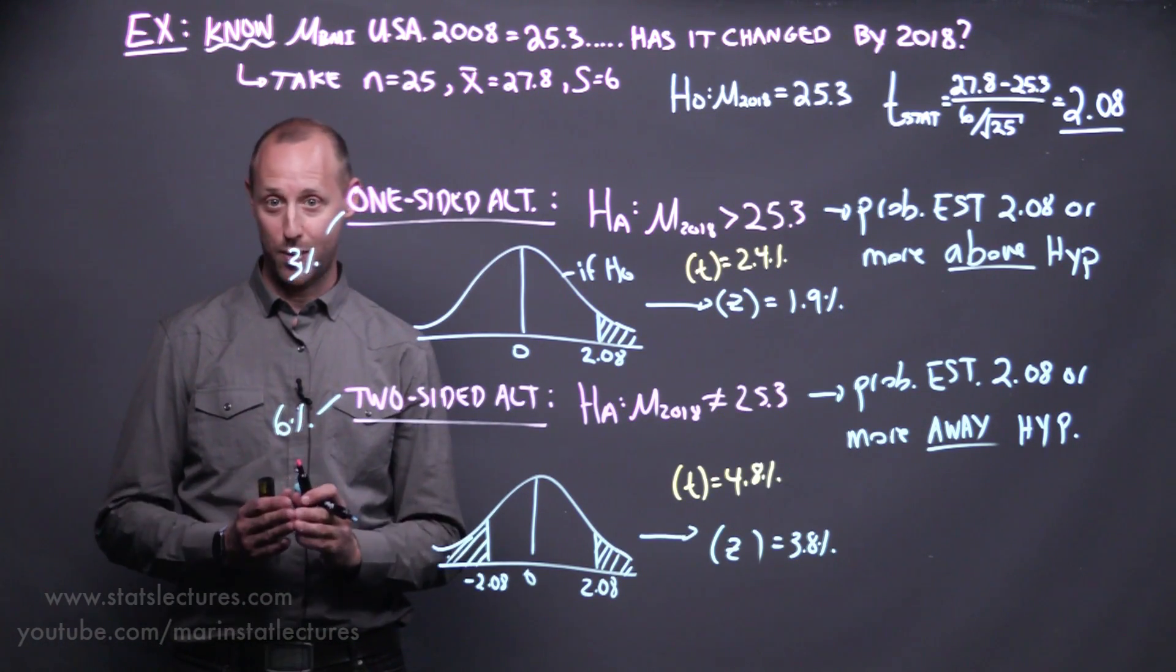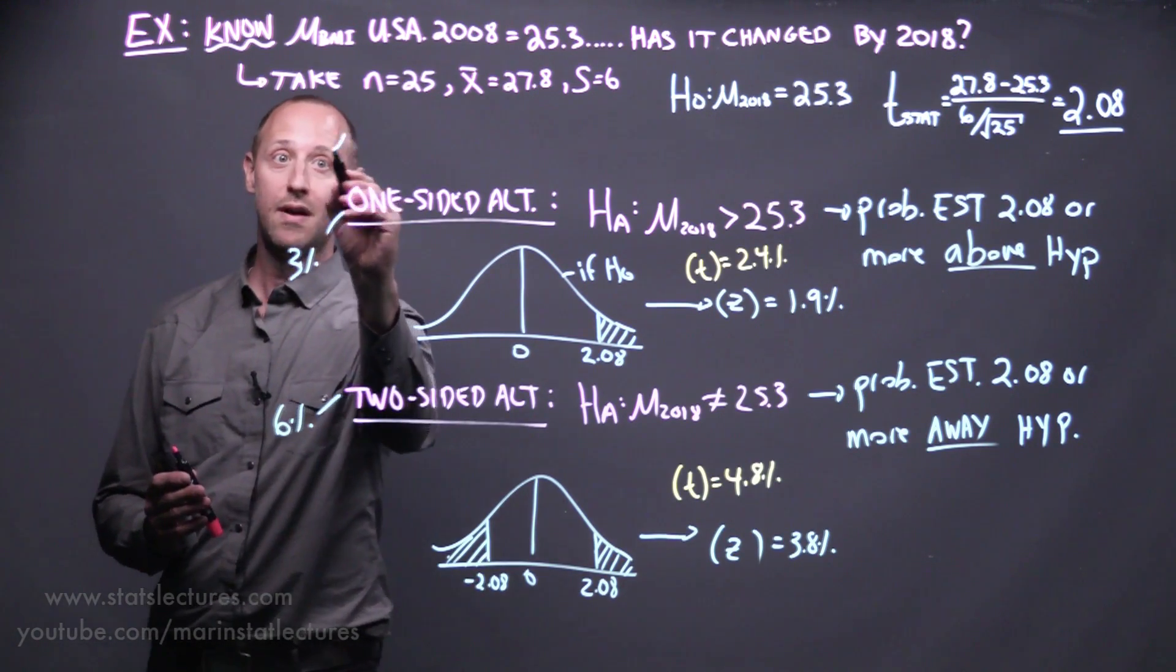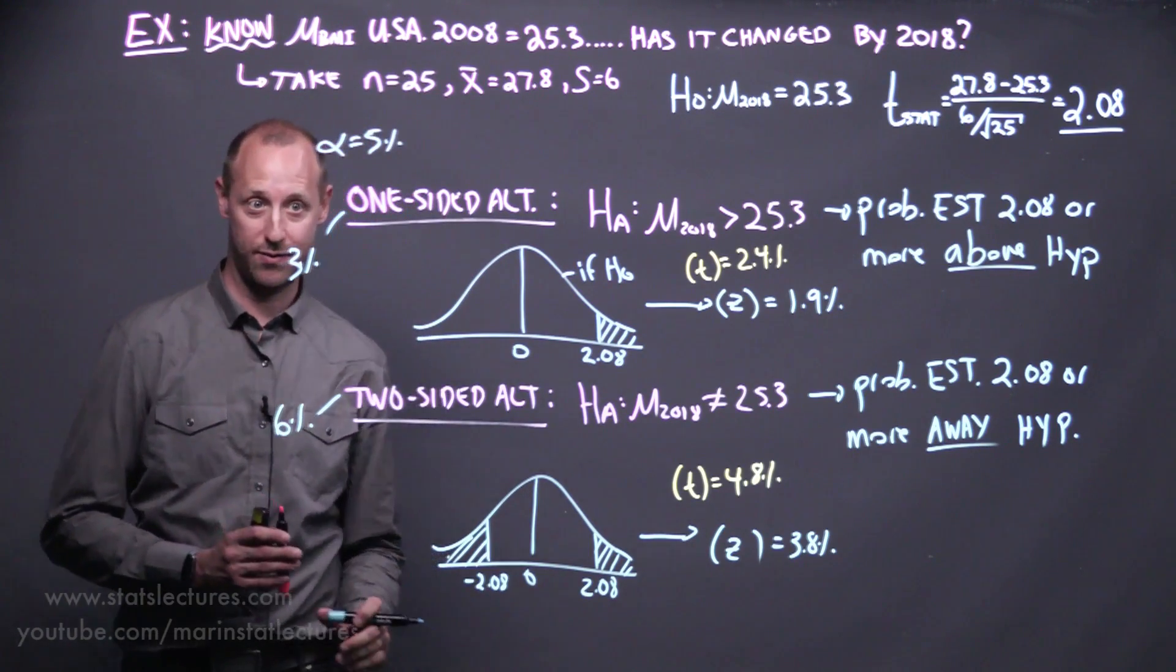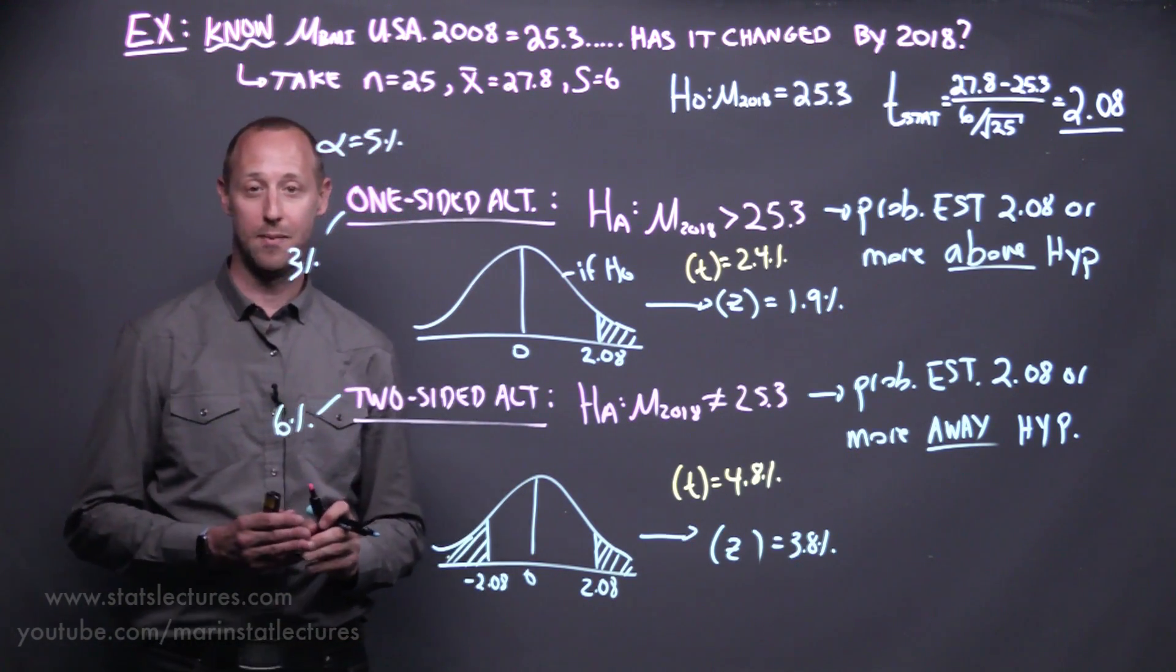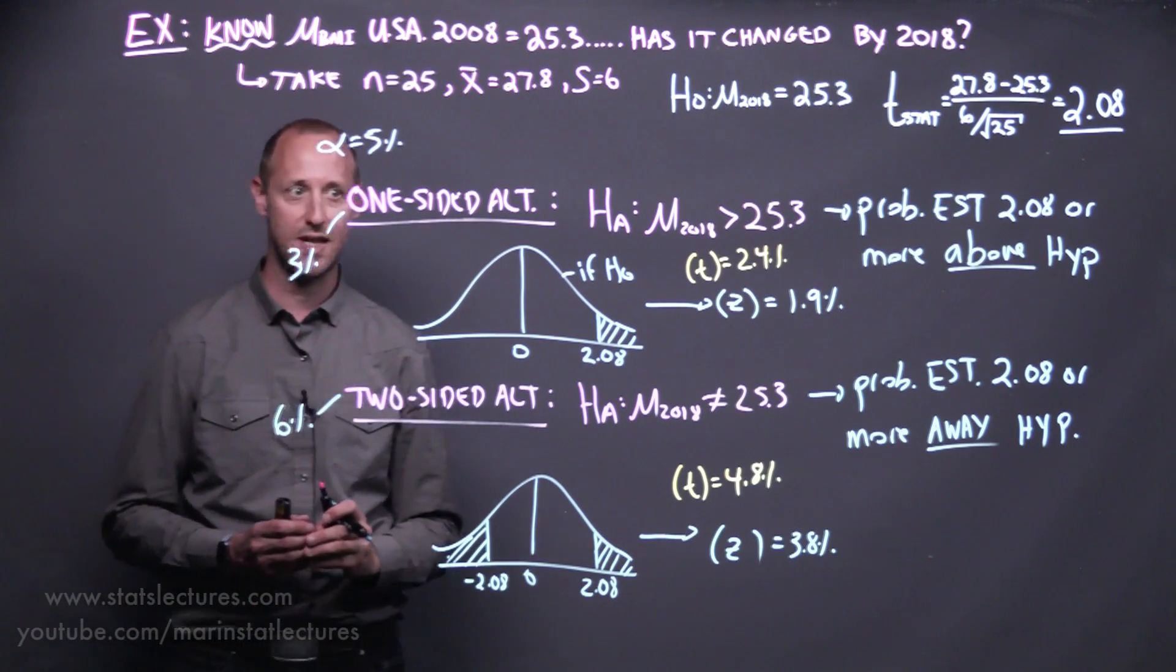But what's important, I can't stress this enough, is we don't want to get stuck on this alpha being 5 percent as a magical cutoff. I would consider the 3 percent and 6 percent p-values of roughly the same.